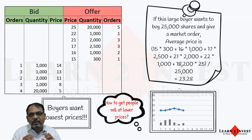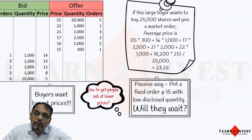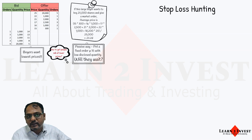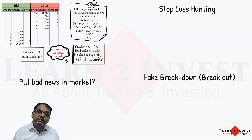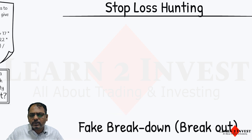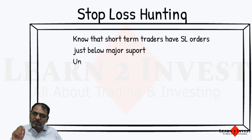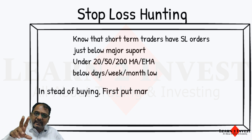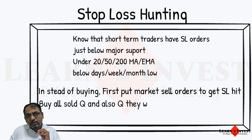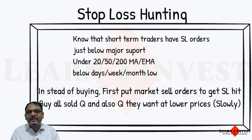There are three things large players do. First, stop-loss hunting. These players know where your stop-losses are — below major support points, under the 20 MA, 50 MA, below day low, week low, and month low. Instead of buying, they sell to get your stop-losses hit. And when your stop-losses are triggered, they are the ones who buy at those very levels. Slowly, they build their portfolio this way.